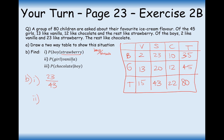Next: the probability that it's a girl given that they like vanilla. Vanilla total is 15, and 13 of those are girls, so the answer is 13 out of 15. Then: what's the probability it's a chocolate fan given that it is a boy? We know it's a boy so we're only looking out of the 35 boys. 10 boys like chocolate, giving 10 out of 35, which simplifies to 2 out of 7.